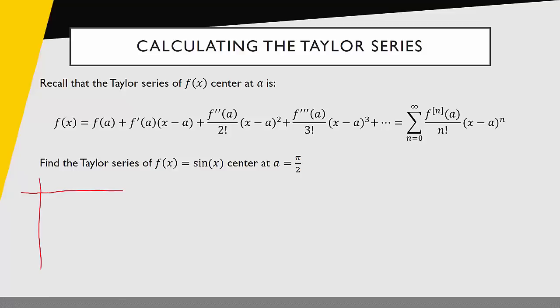The first column is going to be the derivatives. Sine of x was the zero derivative, that's just my function. As before, I had cosine of x, negative sine of x, negative cosine of x, and back to sine of x. What's different in this case is now my next column is going to be that nth derivative evaluated at a, evaluated at π/2.